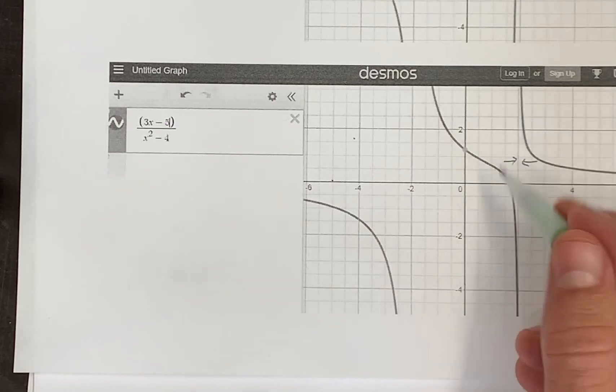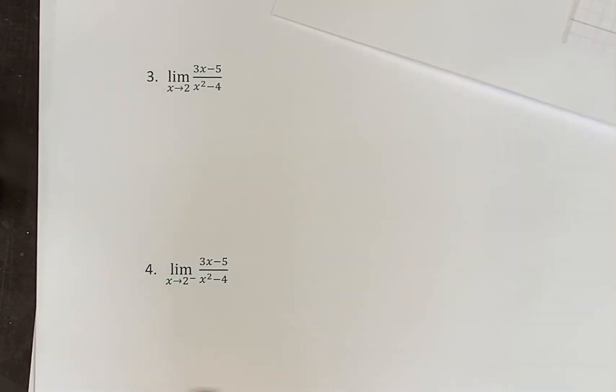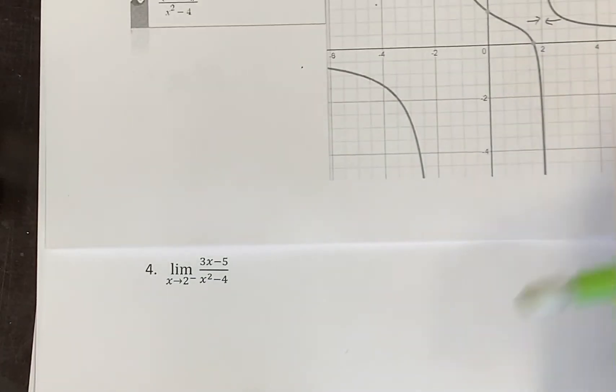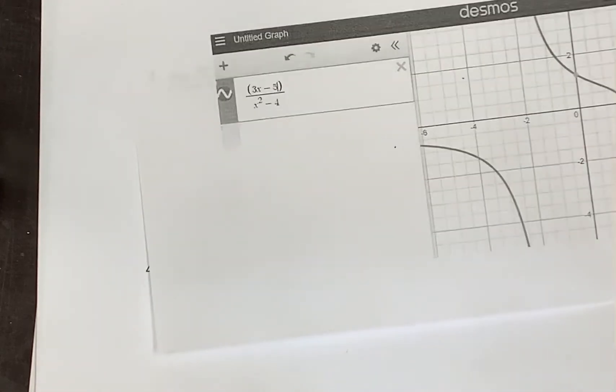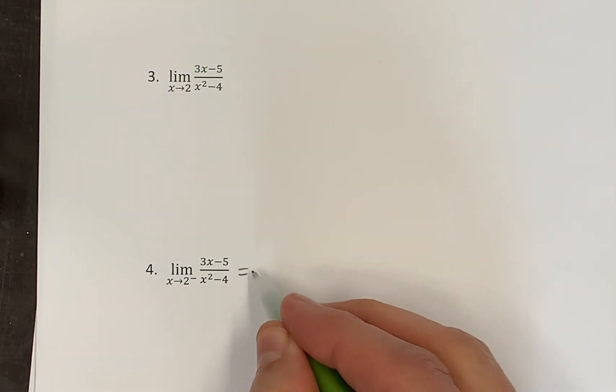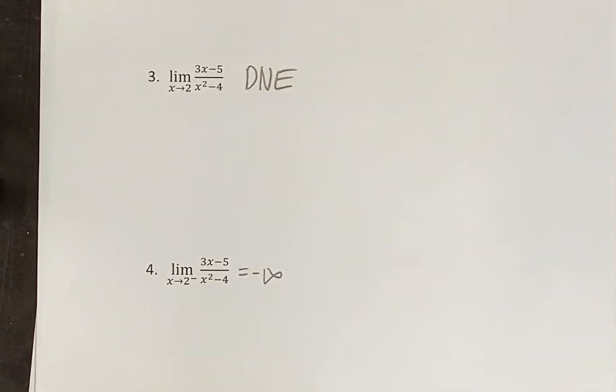You could be getting really big from the right. You could be getting really small from the left. But if you're in this situation where you say only from the left, then suddenly it's predictable and you say, well, if I'm just coming from the left, I'm going towards negative infinity. So this is negative infinity. This does not exist. And life is grand.